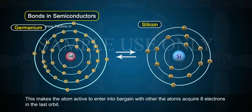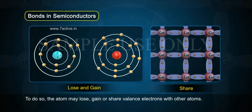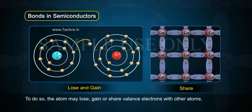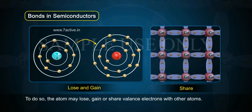This makes the atom active to enter into bargain with other atoms to acquire 8 electrons in the last orbit. To do so, the atom may lose, gain, or share valence electrons with other atoms.